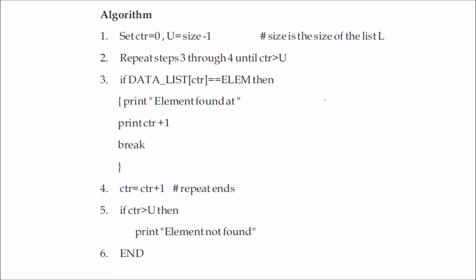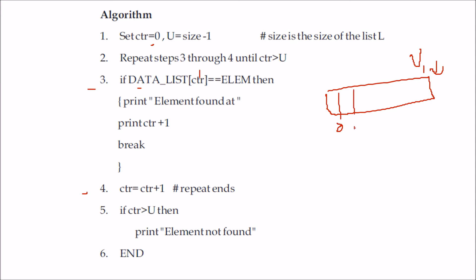This algorithm says we have a list. We start with the counter 0 and the upper bound u is the size of the list. We have to repeat steps — applying a while or for loop — until we reach the end. For every counter from index 0, 1, and so on, we search for the element in the data list. If found, we print element found at location CTR plus 1 and break the loop.